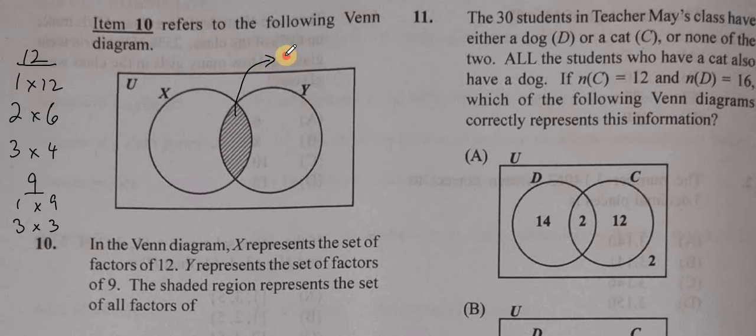The shaded region represents x intersect y. In other words, what members are common to x and y. So what members are common? We have 1 being common to both sets, and we have 3 being common to both sets. So we put 1 and 3 here.